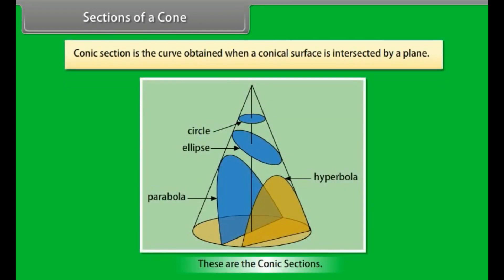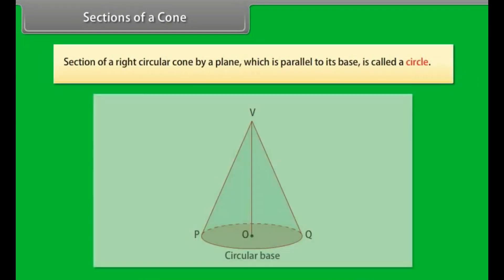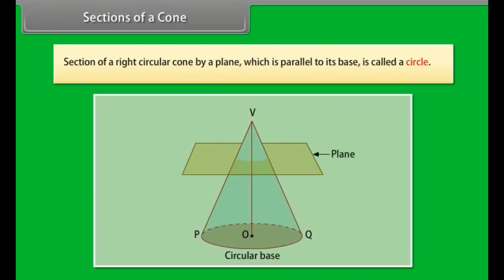Sections of a cone. Conic section is the curve obtained when a conical surface is intersected by a plane. We know that a cone is the surface or solid figure formed by moving a line so that the line always intersects a plane called the directrix and passes through a fixed point called the vertex. Now, we will discuss various sections of a right circular cone.